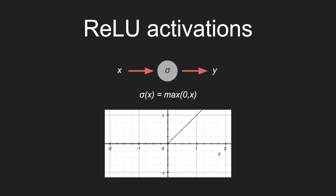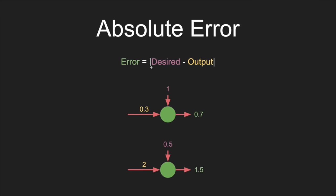Next I want to talk about the objective function. We have this definition of absolute error, which we can draw as a unit: we have the actual output from the network, the desired output, and then the error. The desired output is never going to change — it's basically hard coded into our system. But the output of the network might change, and as the network changes we would expect the error to change. Let's think about this intuitively: if the output from the network is too low — say we want it to be one and right now it's 0.3 — if we increase this a little bit to 0.5, we're closer to the desired output.